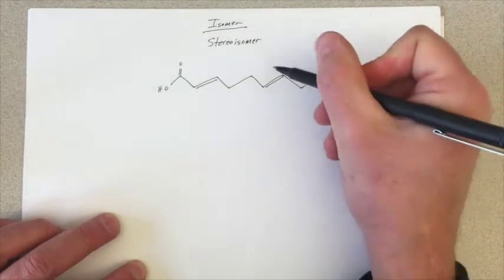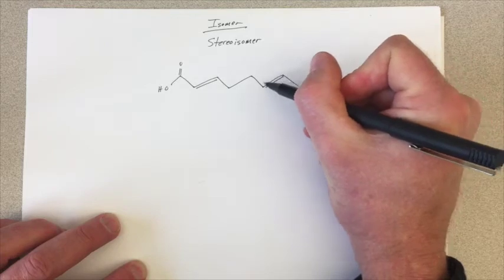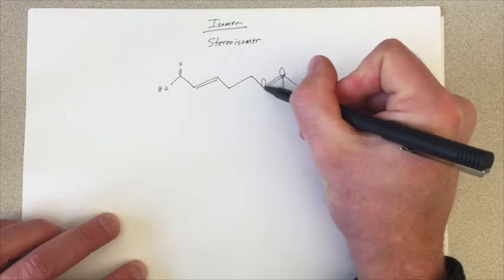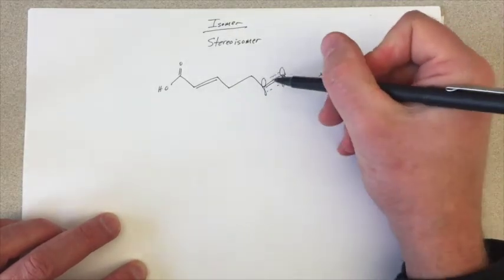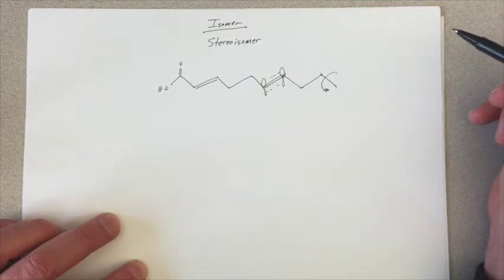But in order to maintain this double bond and the pi bond that's occurring through the p orbitals that are present on each of these carbons, we can't freely rotate that bond without breaking it, without breaking that double bond.